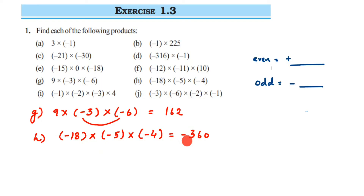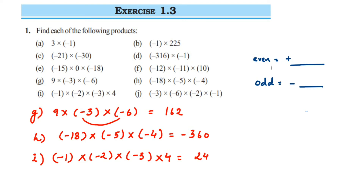Problem I: minus 1 multiplied by minus 2 multiplied by minus 3 multiplied by 4. First multiply the numbers: 1 into 2 into 3 into 4 gives 24. Now let's check the sign — counting the negative signs: 1, 2, 3. There are 3 negative signs, and 3 is an odd number, so the final answer is going to have a minus sign: minus 24.